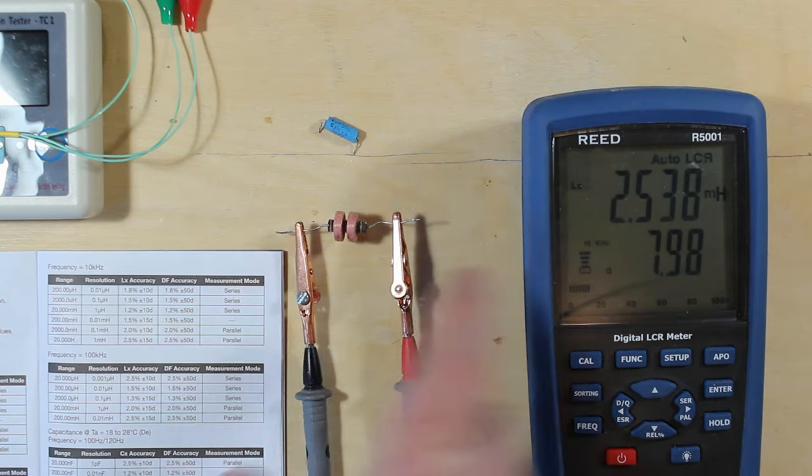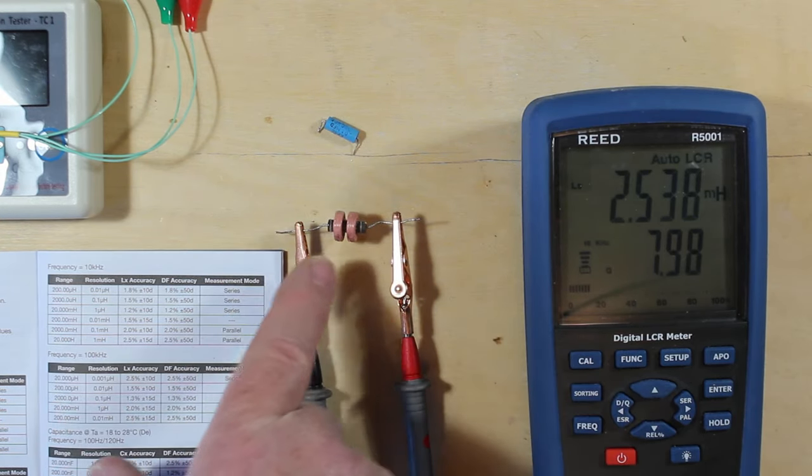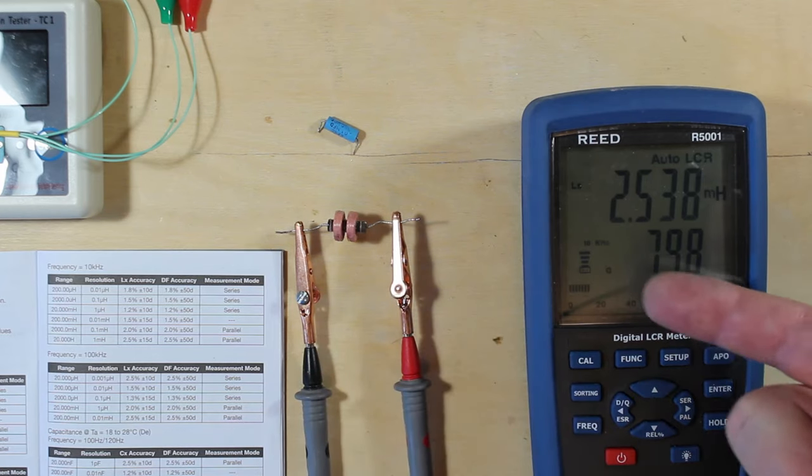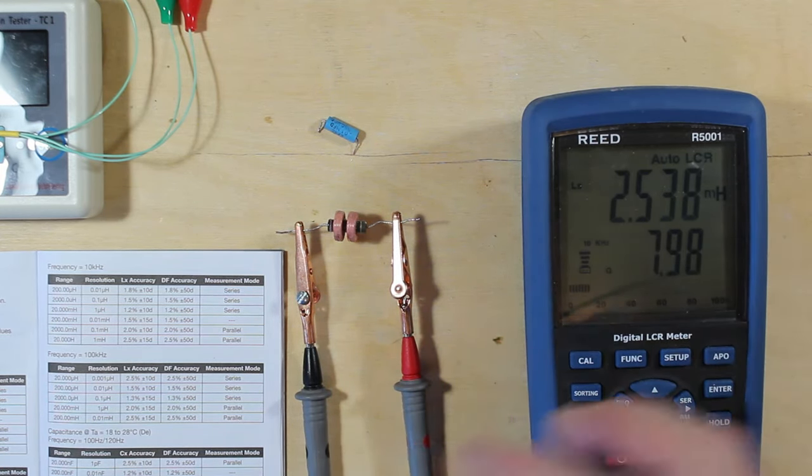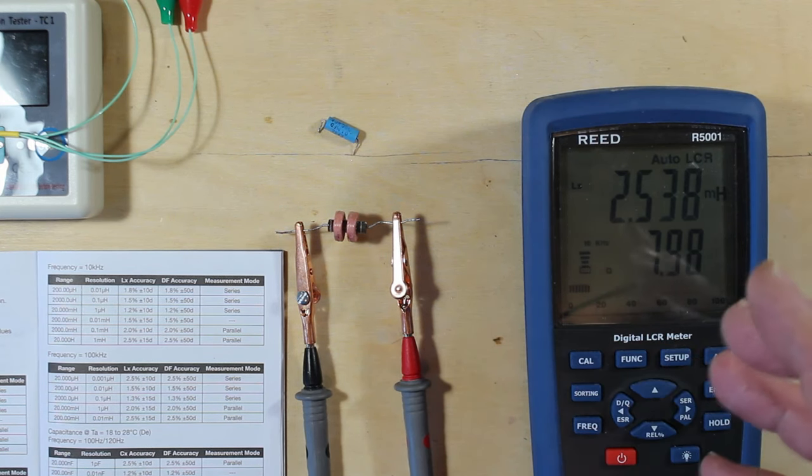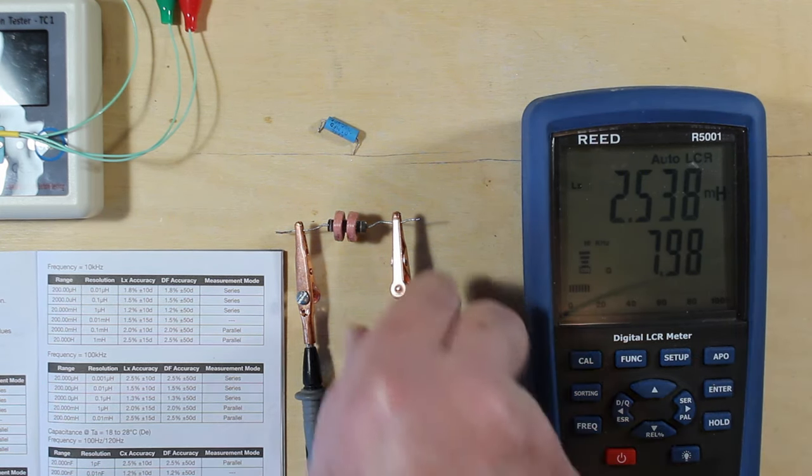So this kind of validates the two previous methods that we used. If we trust this meter right here, this all gives us confidence in our measurements, because they all kind of jive with each other, and they're pretty darn close.